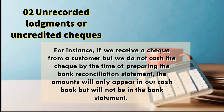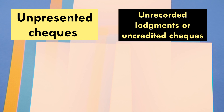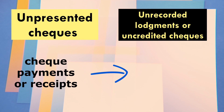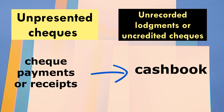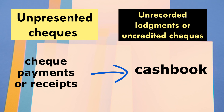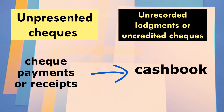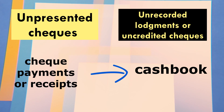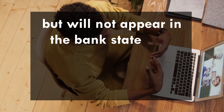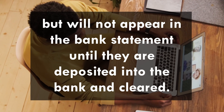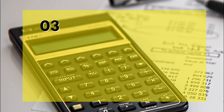Take note of this. In these two instances, it is important to understand that check payments and receipts are recorded in the cash book immediately they are issued or received. So these will be reflected in the cash book and hence general ledger, but will not appear in the bank statement until they are deposited into the bank and cleared.